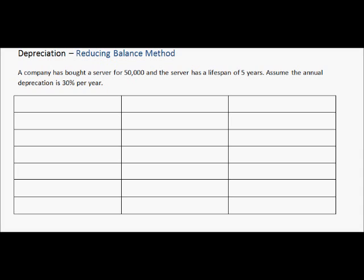Looking at the question here, we see a company has bought a server for $50,000, and the server has a lifespan of 5 years. Assume the annual depreciation is 30% per year. By lifespan, they just mean that at the end of 5 years, we will need to replace the server and get a new server.